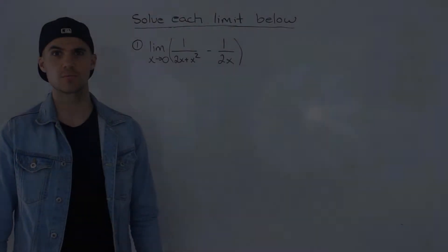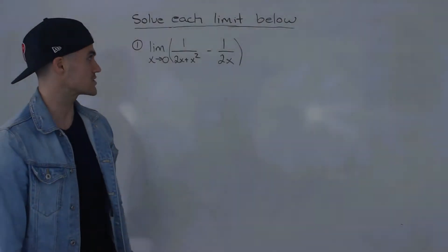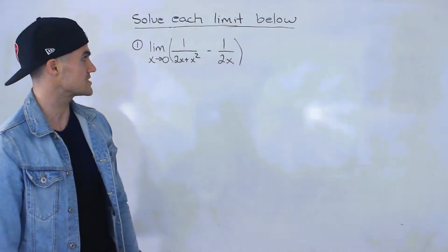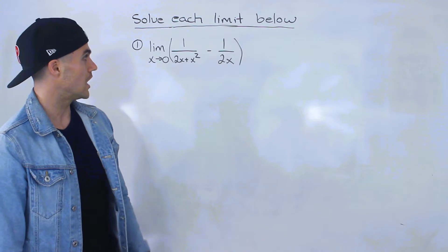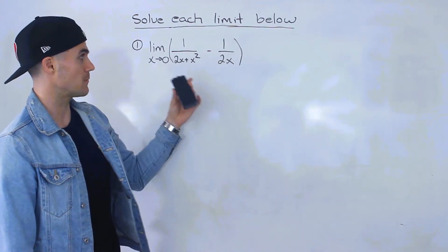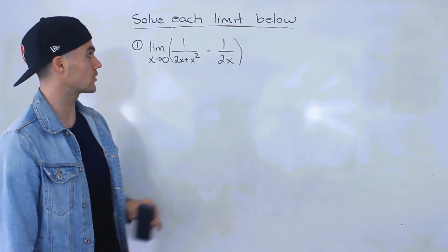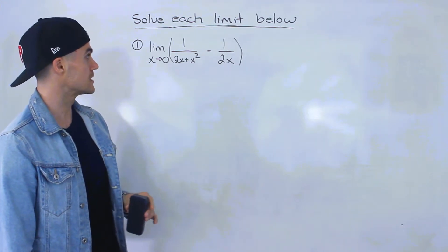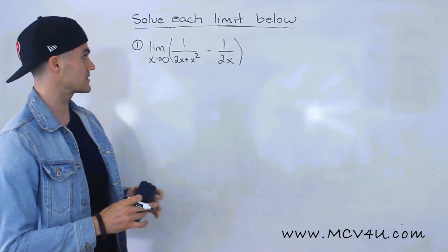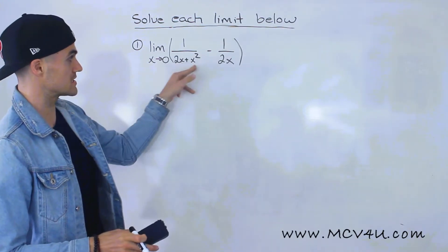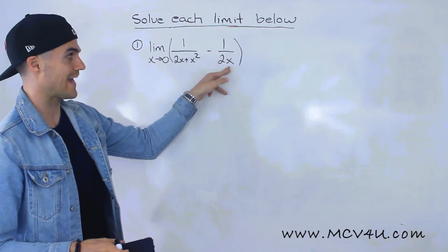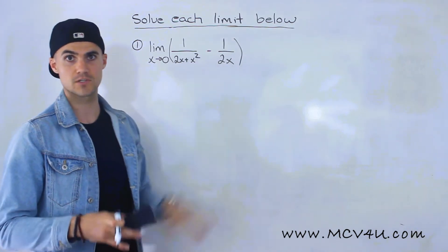Welcome back everyone, Patrick here. Moving on to the next question. We have the limit as x approaches zero of one over two x plus x squared minus one over two x. Notice we can't plug in zero for x because this whole denominator is going to be zero and this denominator is going to be zero.